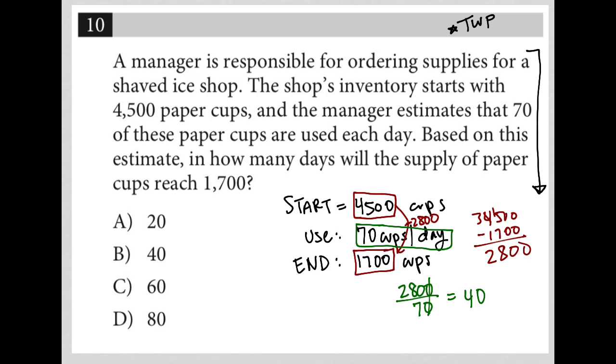So it should take 40 days to use 2,800 cups. And by using those 2,800 cups, I will have reduced the inventory from a starting point of 4,500 down to an amount that is 1,700. So our answer here is choice B.